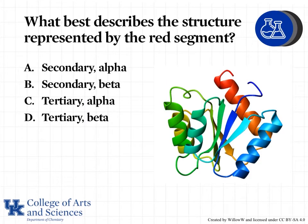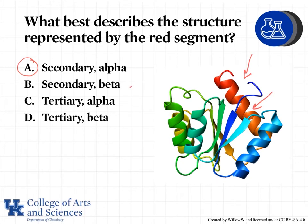What is the best way to describe the structure represented by the red segment? So we're looking at this region right in there. This is part of the secondary structure, and this is an alpha helix. If you're not sure about a helix, imagine the double helix of DNA to get a picture of what that should look like. If it was a beta pleated sheet, it would have more of a fan fold effect.